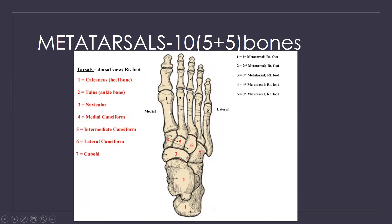The next bone is the metatarsals. You have five metatarsals in each foot — one, two, three, four, five. Five plus five equals ten. So ten metatarsals in total.